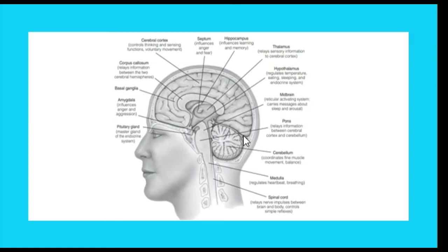We also have the brainstem inside the midbrain. The brainstem connects the forebrain and spinal cord. It comprises the hypothalamus, thalamus, midbrain, and hindbrain. That is why the midbrain, hindbrain, thalamus, and hypothalamus are interconnected — because of the bridging function of the brainstem.